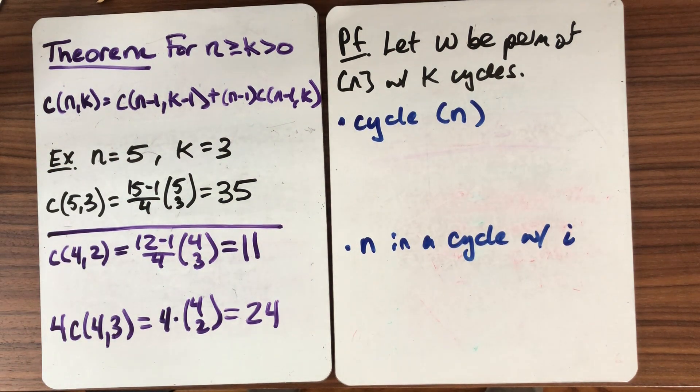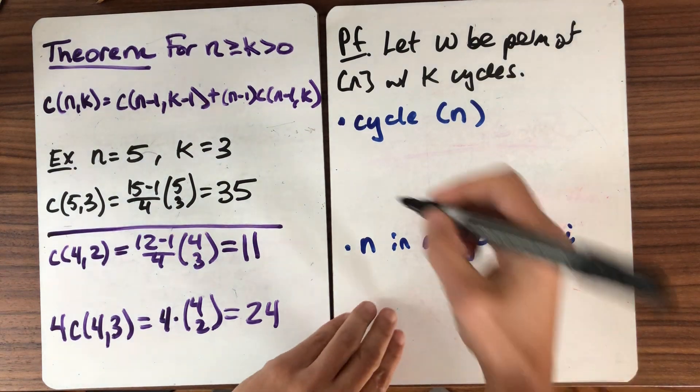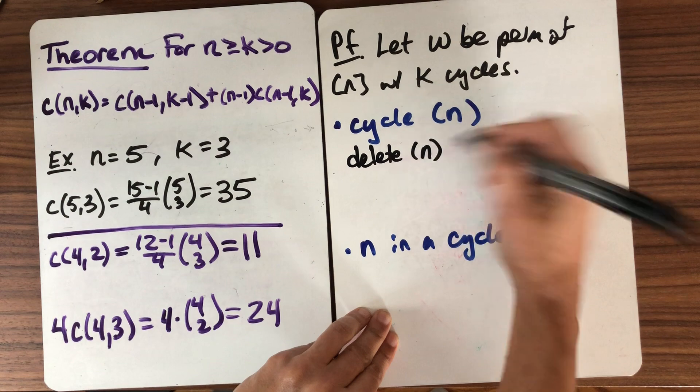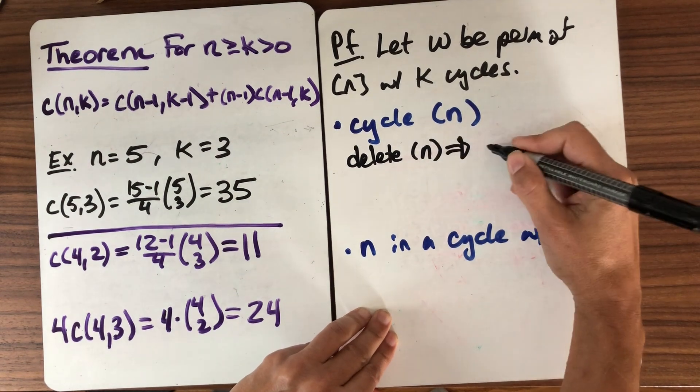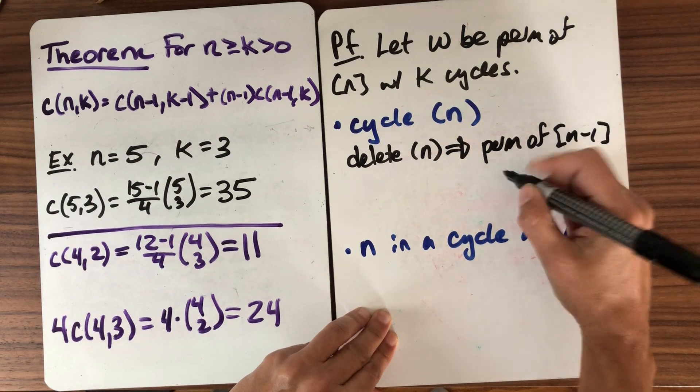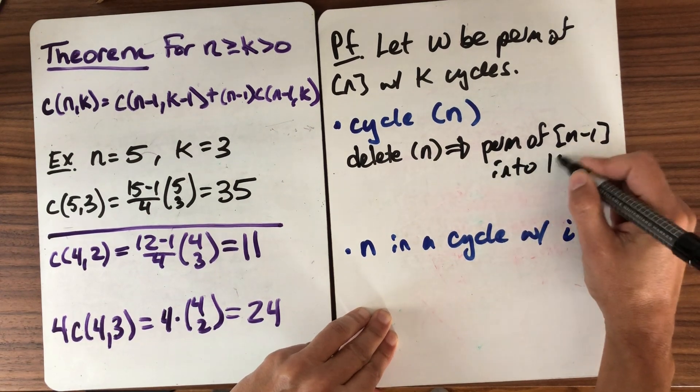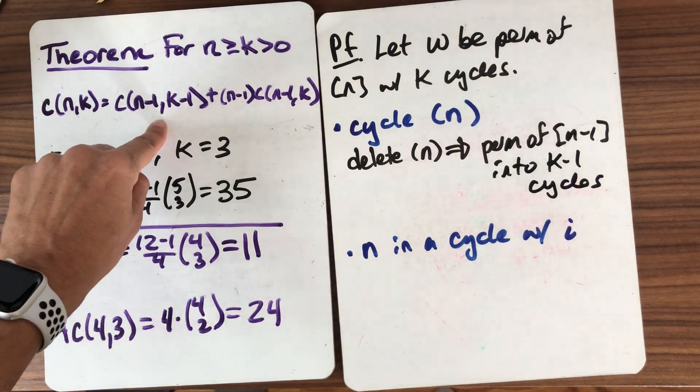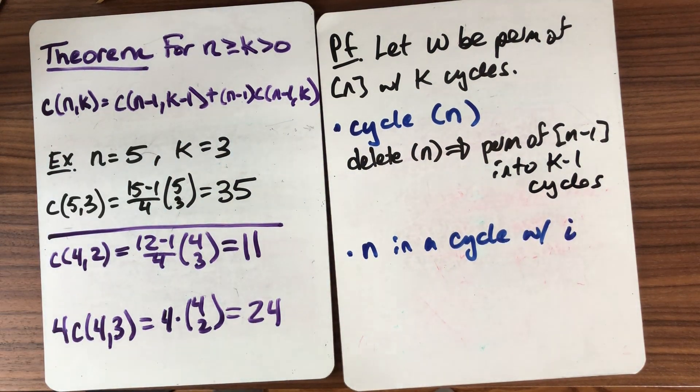So if n is in a cycle by itself, what are we going to do? The same thing we did last time. We're going to delete it. Then delete the whole cycle. What do we get? We get a permutation of n-1 into k-1 cycles. These are exactly counted by this Stirling number. Fantastic.